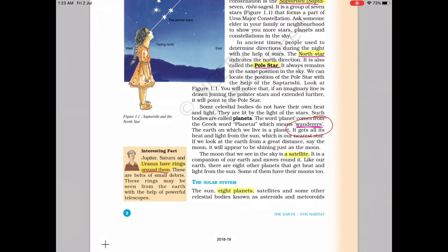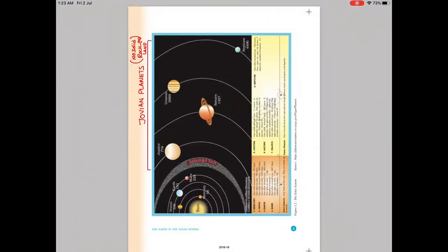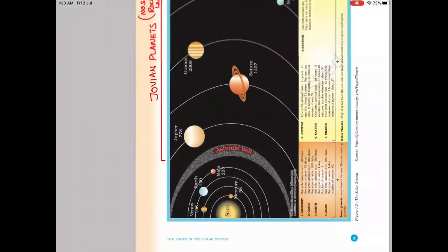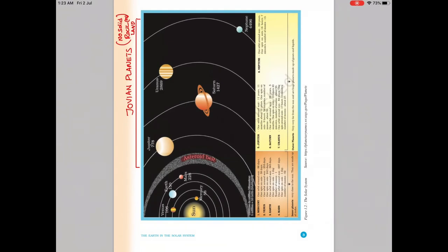The solar system consists of the Sun, our planets and their satellites, and other objects like asteroids, meteoroids, etc. An important topic is the asteroid belt, which is located between Mars and Jupiter. From Jupiter to Neptune — Jupiter, Saturn, Uranus, and Neptune — all are gaseous giants because they don't have any land or rocky surface, and they are called Jovian planets.